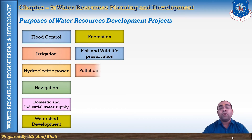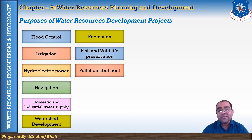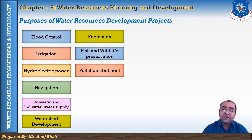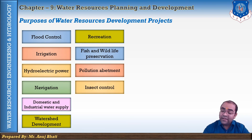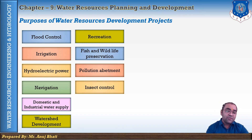Pollution abatement aims to protect and improve water supplies for domestic, industrial, aquatic life, and recreational purposes. Insect control has the objective of protecting public health — controlling insects leads to better health and improved recreational value of forests, crops, and lands. Works and measures for insect control include proper design and operation of reservoirs and extermination measures.